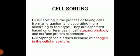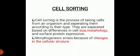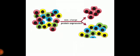Cell sorting is the process of taking cells from an organism and separating them according to their type. They are separated based on differences in cell size, morphology, and surface protein expression — a process of physically separating a cell population in a suspension from the rest. Morphogenesis arises because of changes in the cellular structure or how cells interact in tissue, which is called cell sorting. In the diagram, you can see cell sorting in protein expression — how size and charge are used to separate cells.